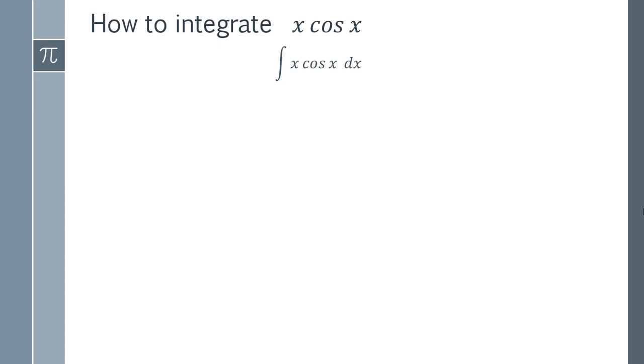So we have our integral there, and the first thing you have to realize is that we've got two things being multiplied together. And in this situation, we tend to use integration by parts. So most integrals where you've got two things multiplied by each other, integration by parts is the best way to do it. And the integration by parts formula tells us that when we have u times dv, the integral of that is going to be u times v minus the integral of v du.